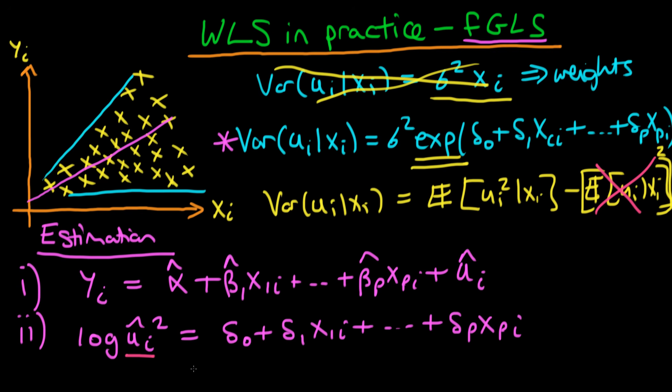The next step is that we actually use our fitted values of these coefficients on the right hand side. So we generate something which we call gi hat, or at least that's what Wooldridge calls it, and then we have delta_0_hat + delta_1_hat times x1i all the way through to delta_p_hat times xpi.